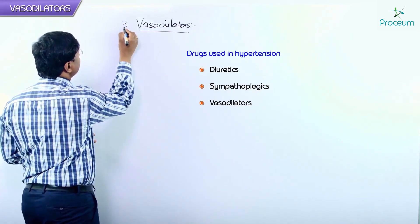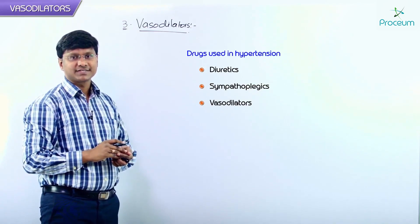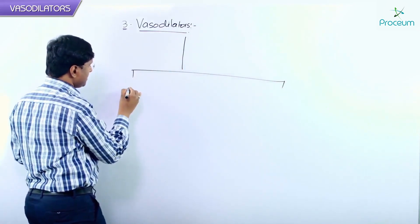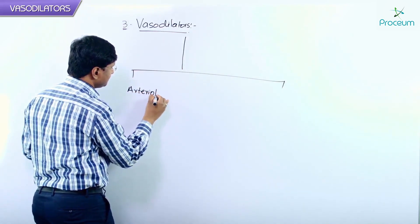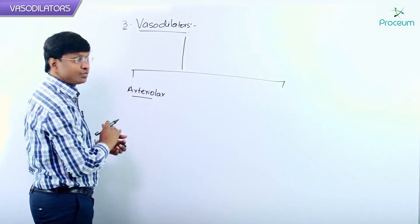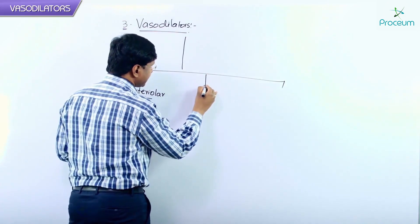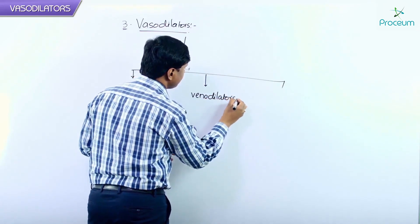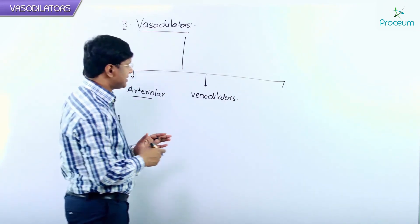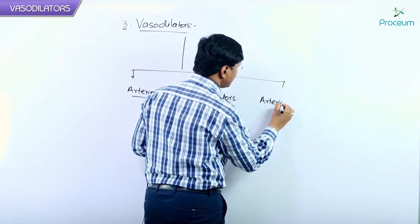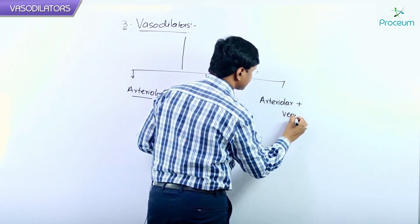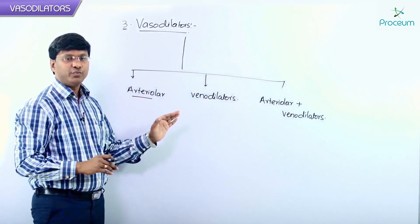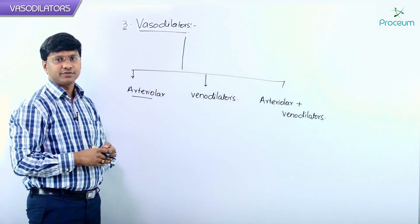Vasodilators can be either arteriolar vasodilators, or they can be arteriolar plus venodilators. These are the ways we can achieve vasodilatation and reduce the blood pressure of an individual.